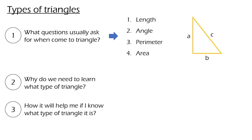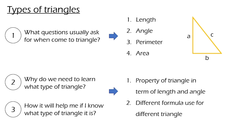Answering the first question, usually when it comes to triangle it will ask for length, angle, perimeter and area. Answering the second and the third question, knowing what type of triangle, we will know the properties of a triangle in terms of length and angle. It also will help us to decide which formula to use for a particular triangle.